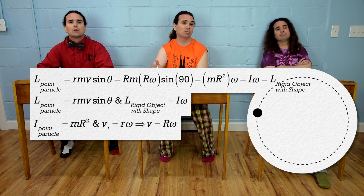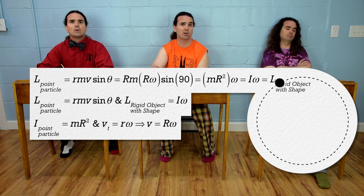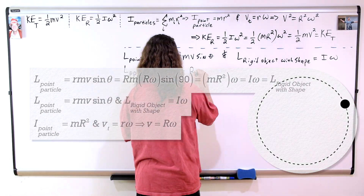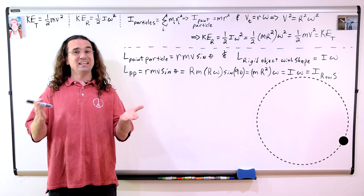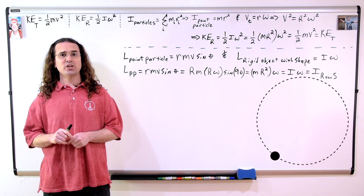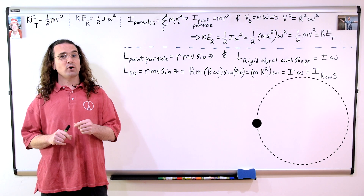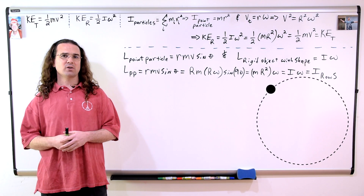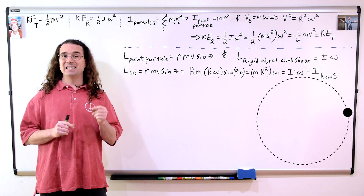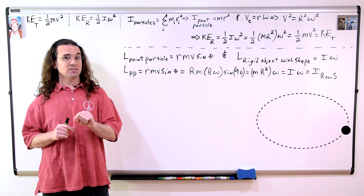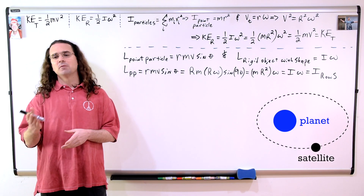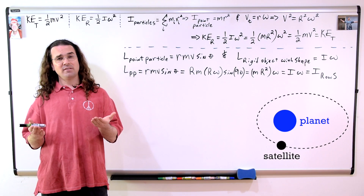It does not matter which equation we use for the angular momentum of a point particle moving in a circle. It is correct that the angular momentum equation for a rigid object with shape is equivalent to the one for a point particle when the point particle is moving in a circle. Now, what if the point particle is moving instead in an ellipse, like a satellite moving in an elliptical orbit? Bobby, does that change any of our derivations?